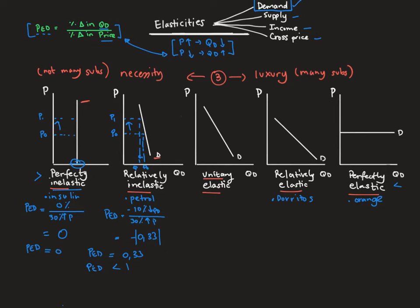In the unitary elastic case, a price increase of 30% is equally matched by a decrease in quantity demanded of 30%. This gives us negative one, but using absolute values, we can say that in a unitary elastic case, the price elasticity of demand is equal to one.